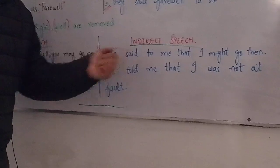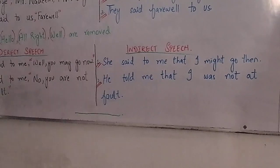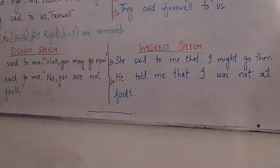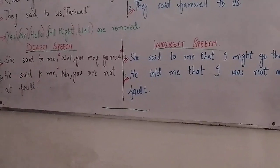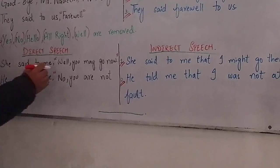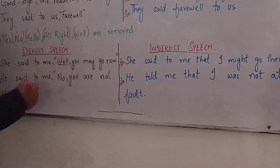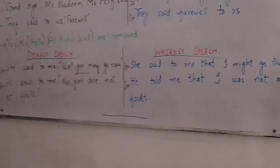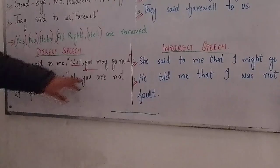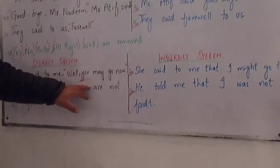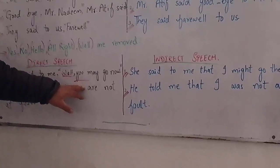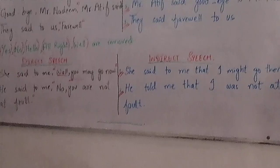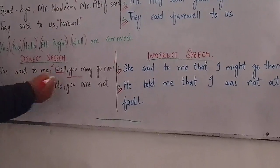'She said to me, well, you may go now' becomes: she said to me that I might go then. The word 'well' is removed. The pronoun 'you' — which is second person — changes according to the object. Here 'me' is the object.